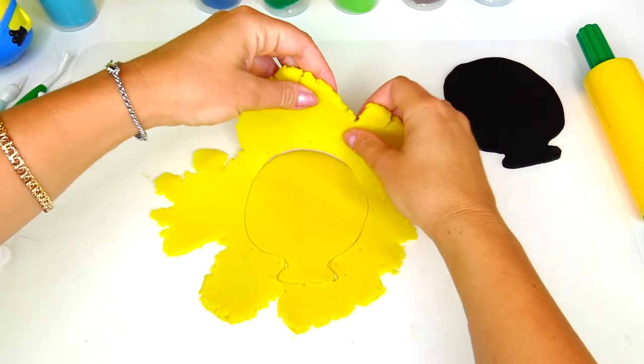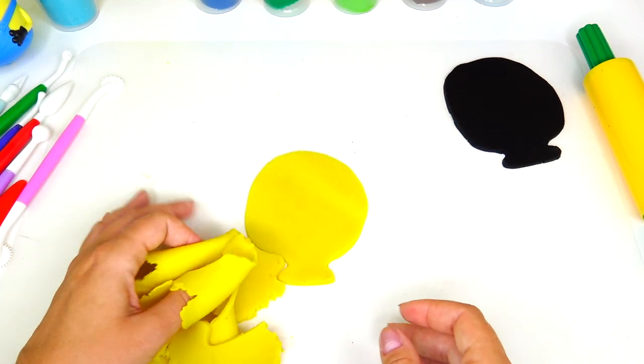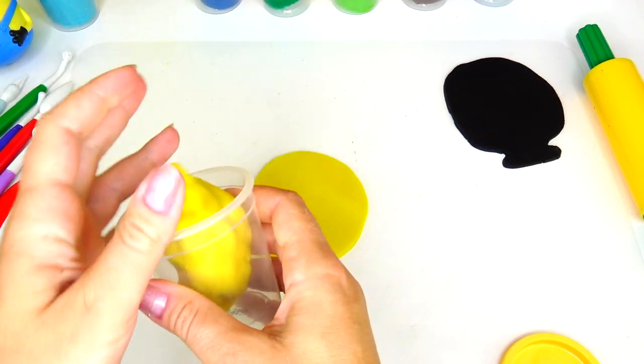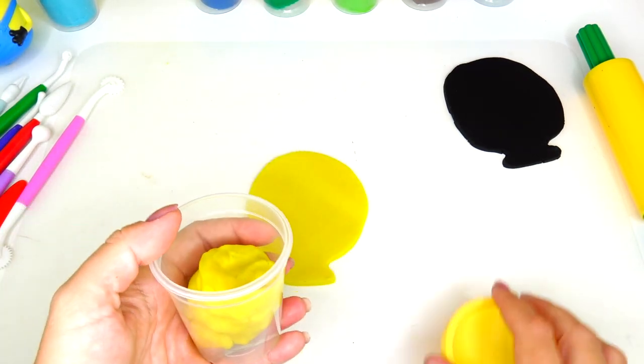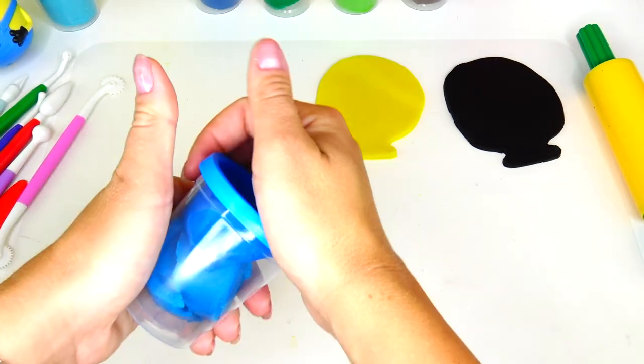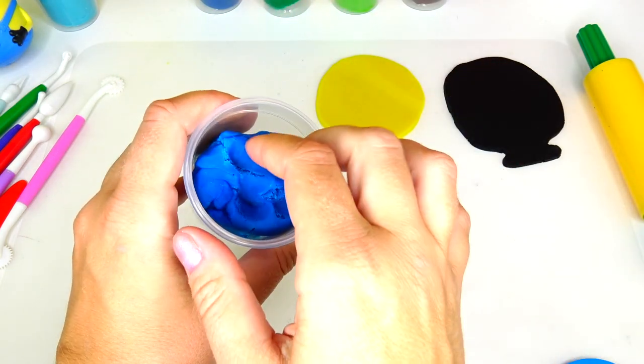I am going to make it a little bit smaller. Let's remove the excess of this yellow dough and put the rest inside the container. We will need a little bit more of this yellow dough for his arms.